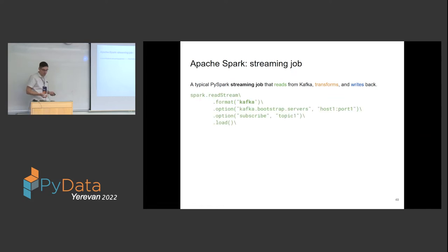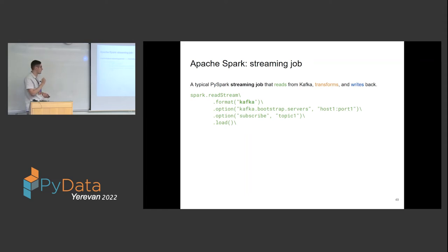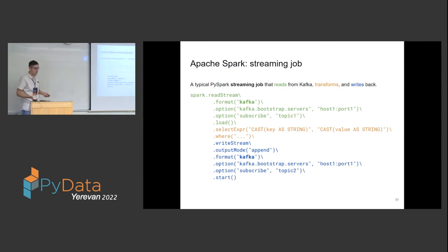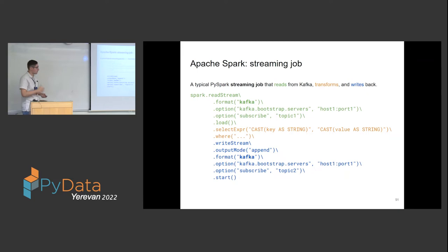For the streaming case it's very similar — almost the same. The main difference is that you use spark.readStream instead of spark.read. In this example we read from a Kafka topic, specify the topic name and location, do transformations, and write to another Kafka topic. This job, unlike the batch job which runs once and finishes, would be running forever until we stop it or until it fails.